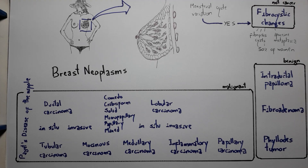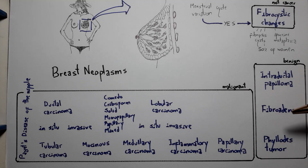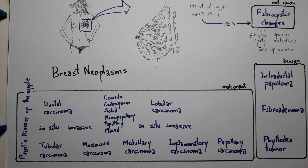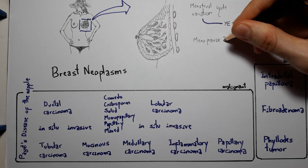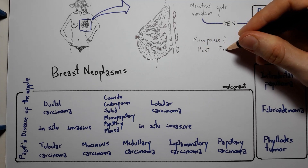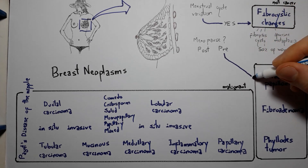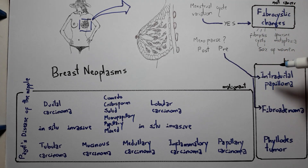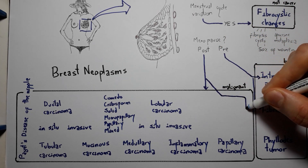There are exceptions to any rule; however, benign breast tumors are usually present in premenopausal women, while malignant breast tumors are more commonly present in postmenopausal women. If your patient is premenopausal, she is more likely to have an intraductal papilloma or a fibroadenoma. If your patient is postmenopausal, she is more likely to have a malignant neoplasm — or a phyllodes tumor, which is the exception here, being the benign neoplasm more commonly present in postmenopausal women.